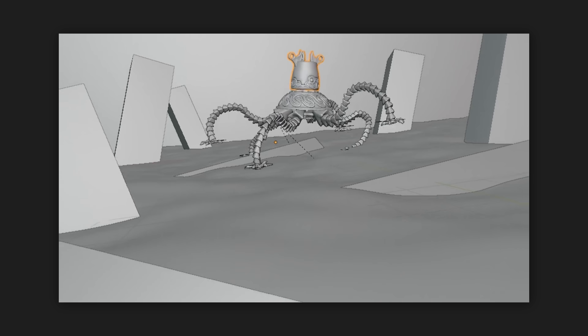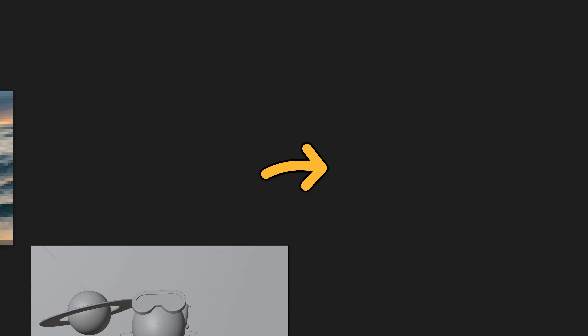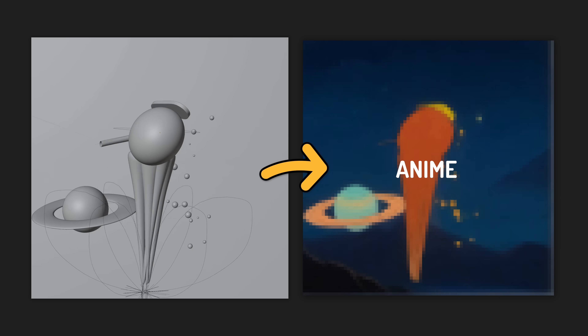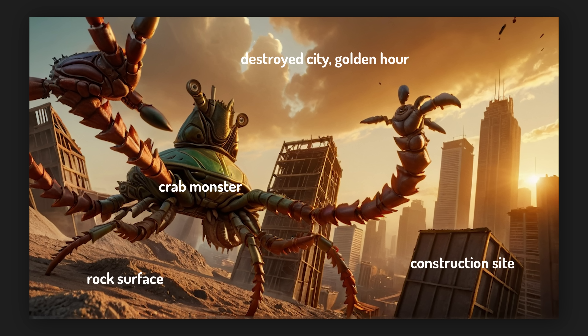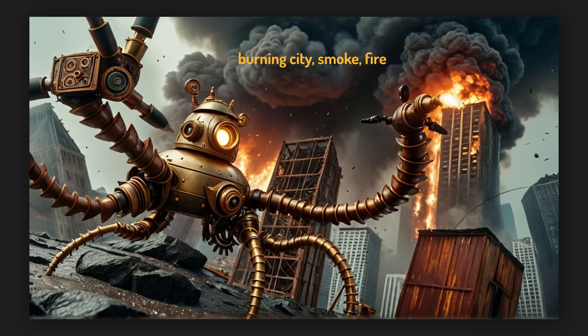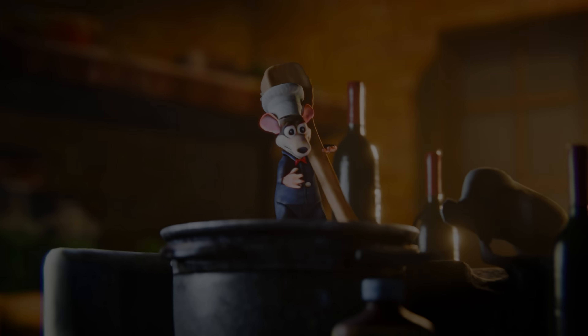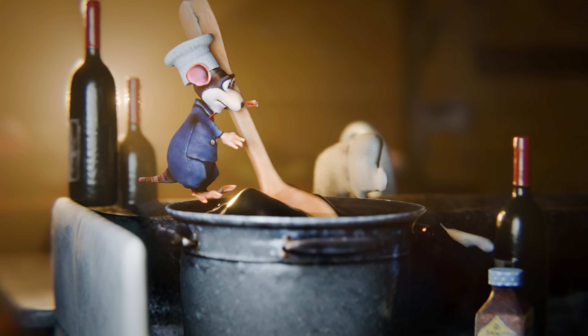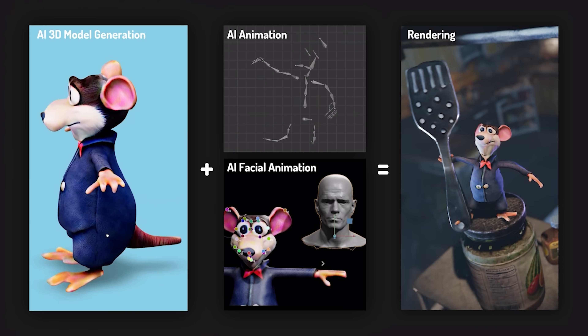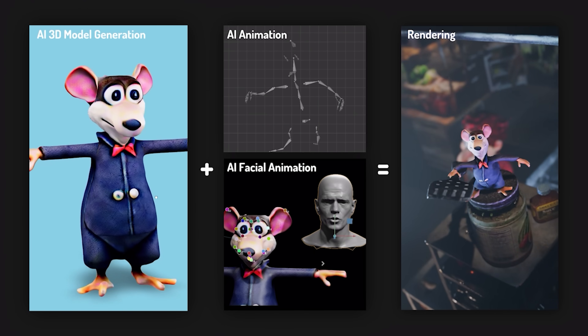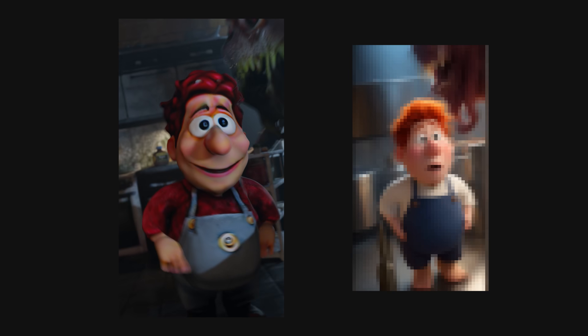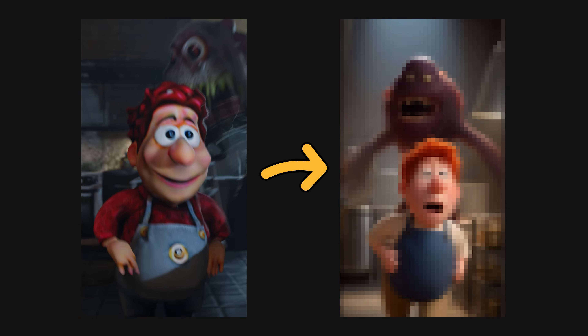AI is the future of rendering, and to prove it I'm going to develop a workflow that lets you render any 3D scene in any style. It will also offer full control of the final image so you can create separate prompts for all the different objects in your scene. A few months ago I created a fully AI generated 3D short film. Everything from the modeling to the texturing to the animation was done with AI except for the rendering, so today I want to fix that. Let me show you how.